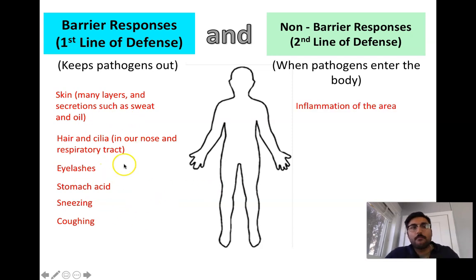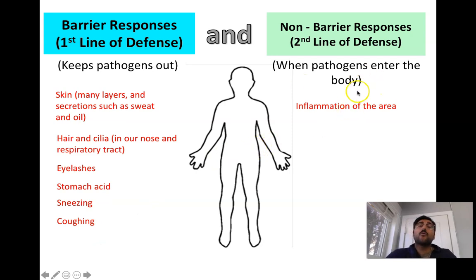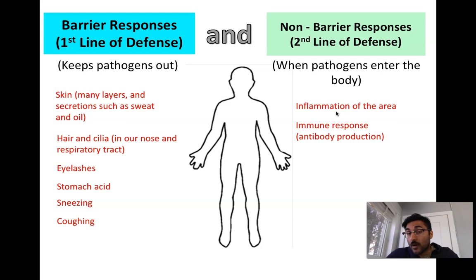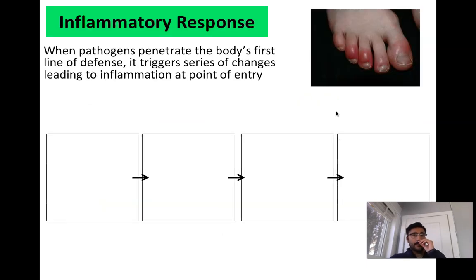Once the first barrier defenses have been breached and pathogens have actually entered our bloodstream, we have what's called the second line of defense. This is where you might get something called inflammation — burning, bruising, a lump forming. You might also get a full-blown immune response, which is when antibodies are produced. We'll discuss those in great detail shortly, but first I want to start with the inflammatory response.